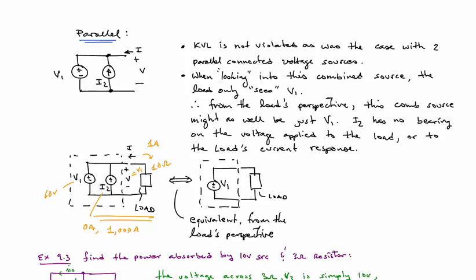But what will be very different for the voltage source is that in the first case, the voltage source will be supplying 1 amp or 10 watts to the load. In the second case, it will be supplying 10 watts to the load, but then it will be receiving 10,000 watts from I2. So it will be receiving a net, what is that, 9,990 watts.